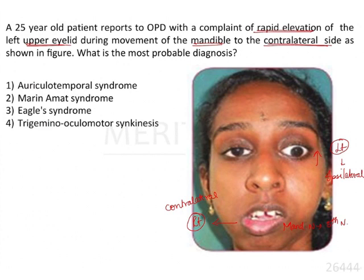Elevation of the upper eyelid is brought about by the levator palpebrae superioris muscle, which is supplied by the third cranial nerve — the oculomotor nerve. Therefore, there is some aberrant connection between the fifth cranial nerve (mandibular nerve) and the oculomotor nerve in this patient. With this basic knowledge, let's look into the various options.